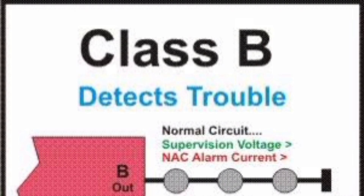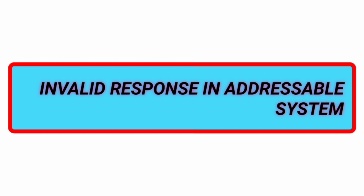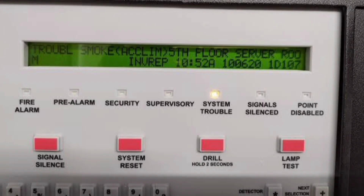I will go deeper into classes of wiring in an upcoming video. NAC devices like bells, horns, strobes, and visual notification appliances get open trouble shown as a NAC fault or trouble on the NAC circuit. To clear this open trouble, we go with the same troubleshooting approach as the conventional type open fault.